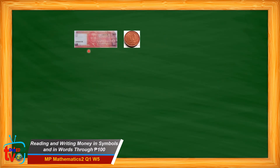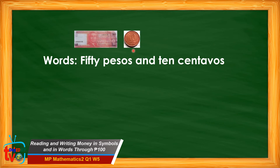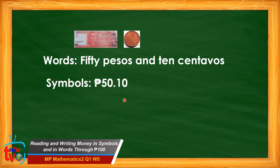Another example: we have the fifty-peso bill and the ten-centavo coin. How do we write it in words? We write the words fifty pesos and ten centavos. What about in symbols? We write first the peso sign, then fifty, followed by a decimal point, then ten. We read this as fifty pesos and ten centavos.